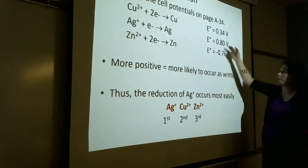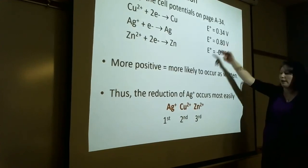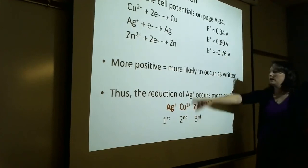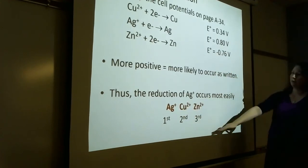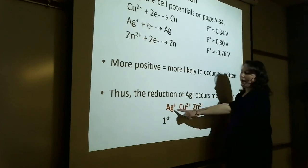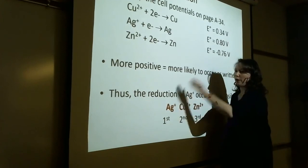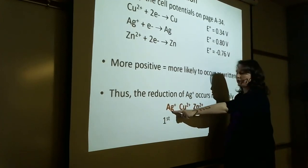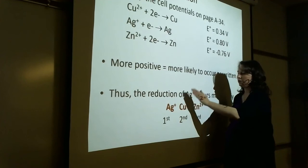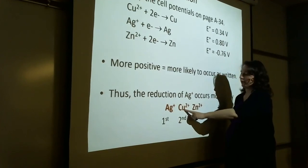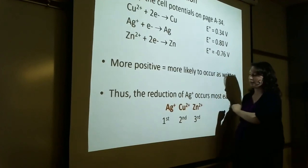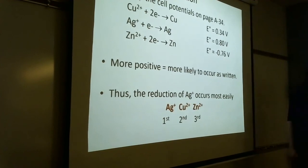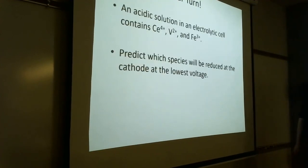Silver metal gets electroplated out first, then copper metal second, then zinc metal third. The larger the standard reduction potential, the higher it is on the priority list. So you'd observe silver metal on the plate first, then copper metal on top of that, then zinc metal on top of that.